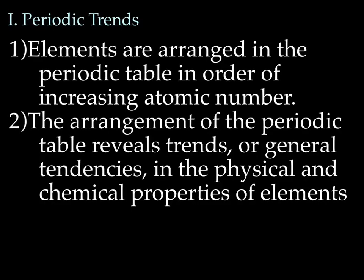Elements are arranged in the periodic table in order of increasing atomic number. That in and of itself is a periodic trend. We have hydrogen which has an atomic number of one, and then helium, lithium, beryllium, boron. The arrangement of the periodic table reveals other trends or general tendencies in the physical and chemical properties of elements.